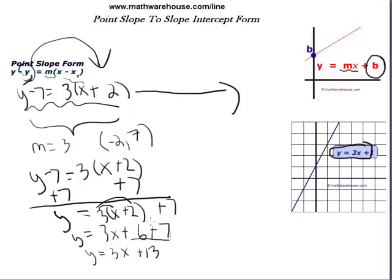Then we distributed m, or 3 in this case, to both the terms in the parentheses, 3x plus 6. And then we simplified by adding the 6 and the 7. So we now have our equation in slope-intercept form. We can see the slope is still 3 like it was in the original point-slope form, and we know that the y-intercept is 13.